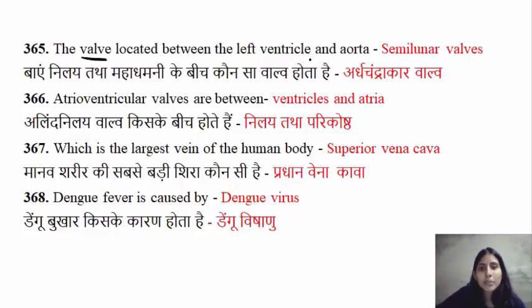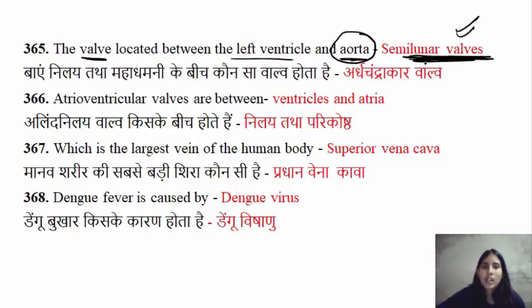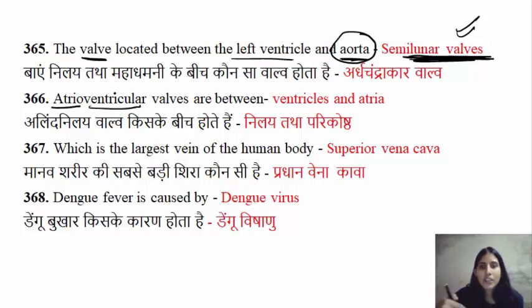The valve located between the left ventricle and the aorta — at the opening of the aorta — is called the semi-lunar valve. The other name is the atrio-ventricular valve, which is present between the atria and ventricles.